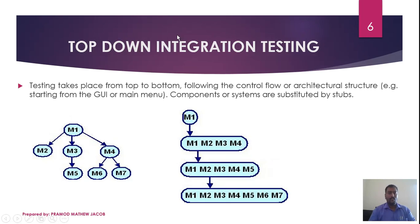The next level is Top Down Integration Testing. M1 is integrated first, then M2, M3, and M4. The next level integrates M5, M6, and M7. The main program is integrated into the sub-modules from the top down. We are creating dummy functions and components that are substituted by stub modules.